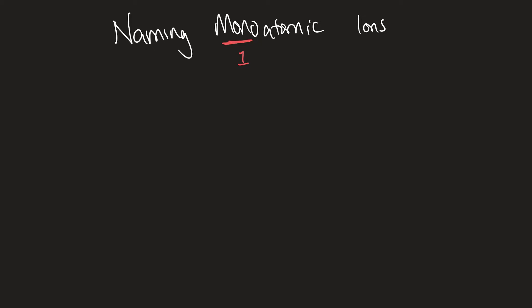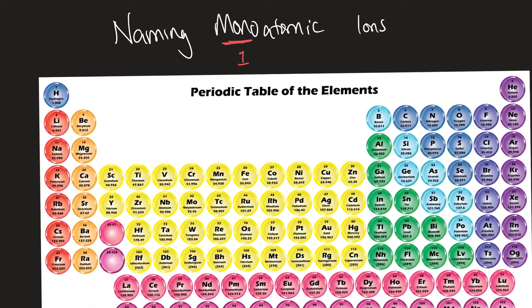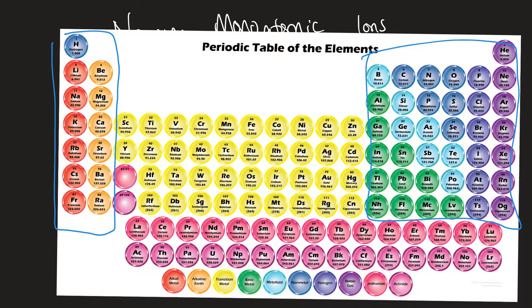The first thing I want to talk about is the main group elements — specifically the main group metals. Let's look at the periodic table and highlight them. Your main groups are your first two columns, then we skip over the transition metals, and then we have the last six. So these are considered the main groups.